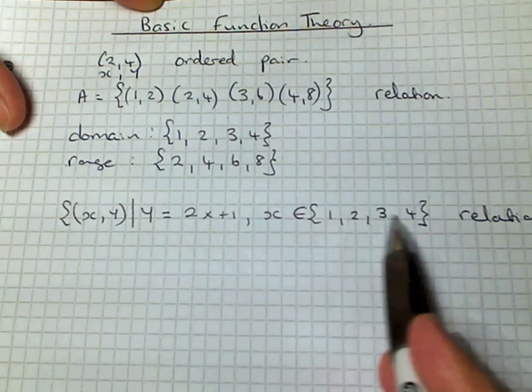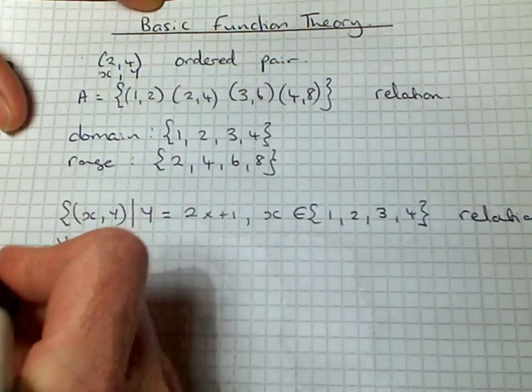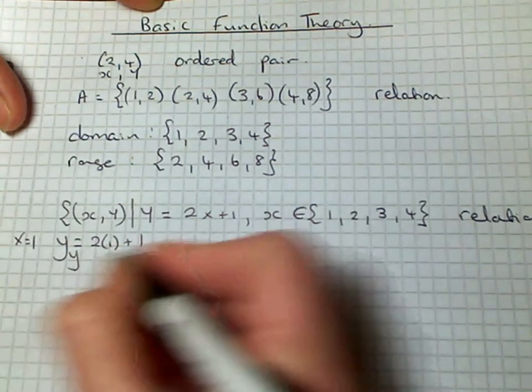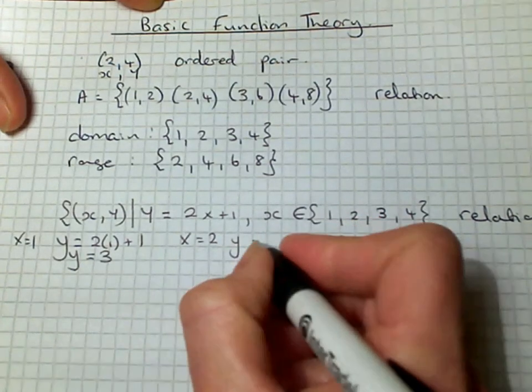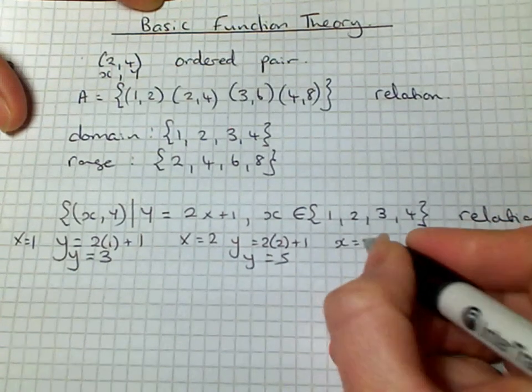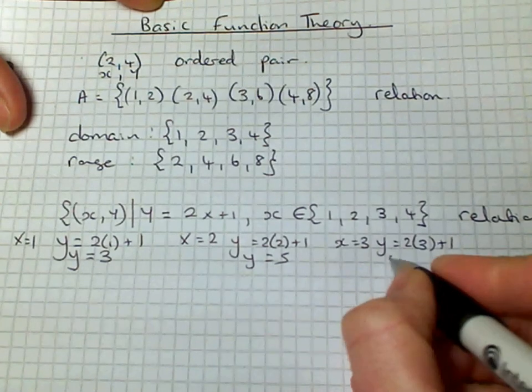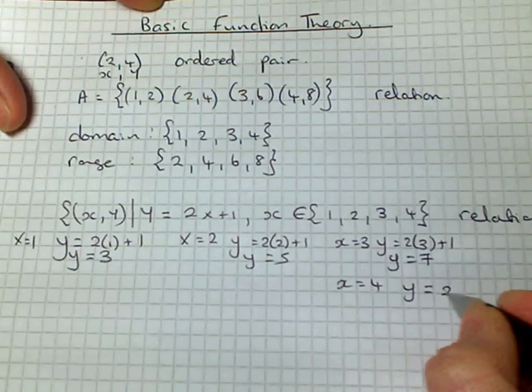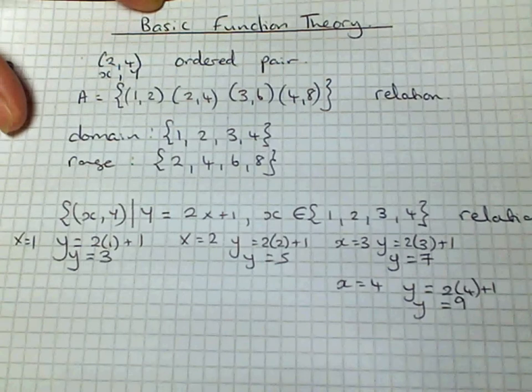All we need to do is input our x values to find our corresponding y values. So when x equals 1, y equals 2(1) + 1, so y equals 3. When x equals 2, y equals 2(2) + 1, so y equals 5. When x equals 3, y equals 2(3) + 1, so y equals 7. And when x equals 4, y equals 2(4) + 1, so y equals 9.